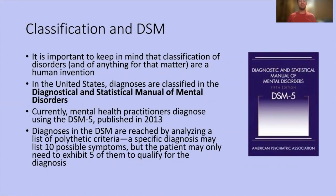Regarding classification and the DSM — it is important to keep in mind that classification of disorders is a human invention, kind of like we were talking about intelligence before. Things can get very subjective, but the main goal is to classify things so that we understand them better. In the United States, we use the DSM, which stands for the Diagnostic and Statistical Manual of Mental Disorders. Mental health practitioners currently use the DSM-5, published in 2013.